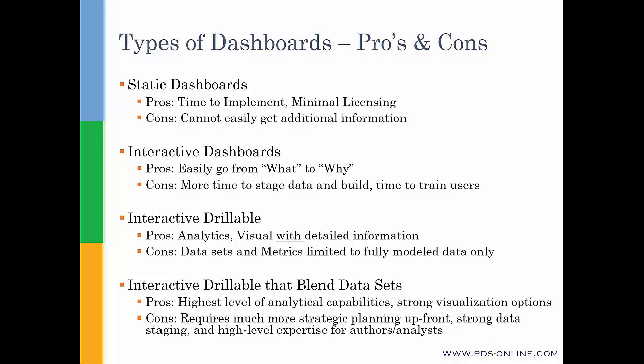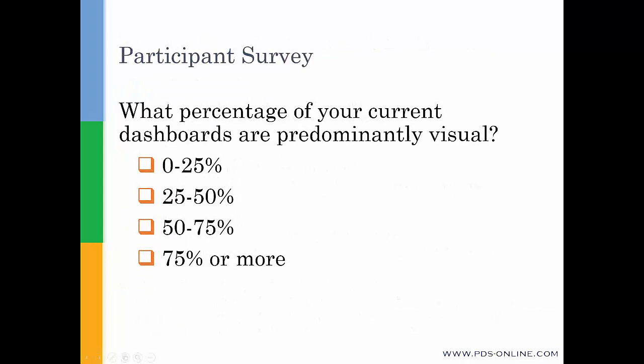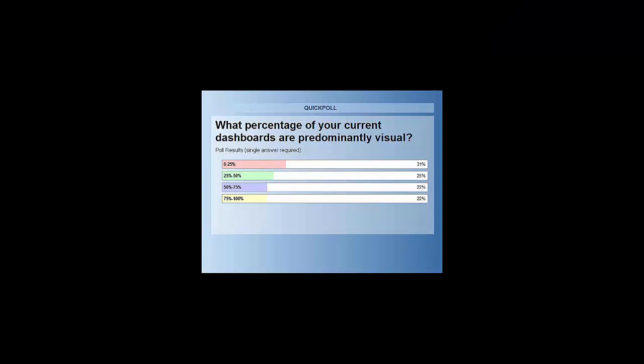We're going to do a quick survey here. The question is: what percentage of your current dashboards within your organization are predominantly visual? It looks like about a third of the organizations are saying very little. About 45–50%, or somewhere between 25% and 75%. And not surprising, just 20% of the organizations are saying much of what they're doing is visual. It's hard to get information out of scheduling systems — they weren't built for that — and we all do various things with the way we set up templates and look at data.